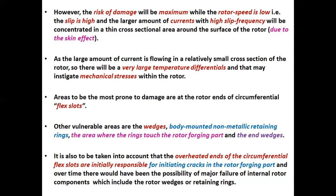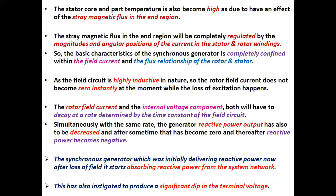Areas most prone to damage are at the rotor ends of circumferential flex slots. Other vulnerable areas are the wedges, body-mounted non-metallic retaining rings, the area where the rings touch the rotor forging part, and the end wedges. It is also to be taken into account that the overloaded ends of the circumferential flex slots are initially responsible for initiating cracks in the rotor forging part, and over time there would be the possibility of major failure of internal rotor components, which include the rotor wedges or retaining rings. The stator core end part temperature also becomes high due to the effect of stray magnetic flux in the end region.